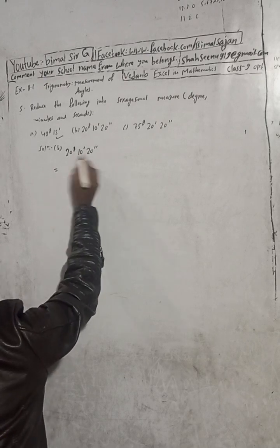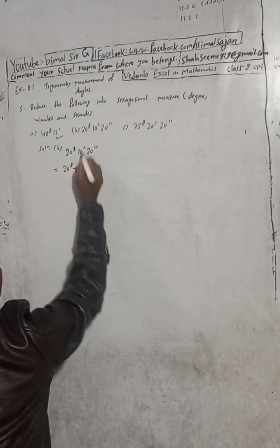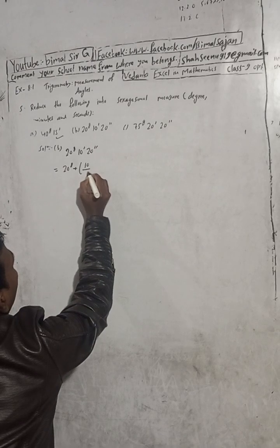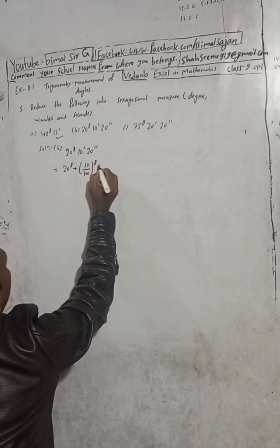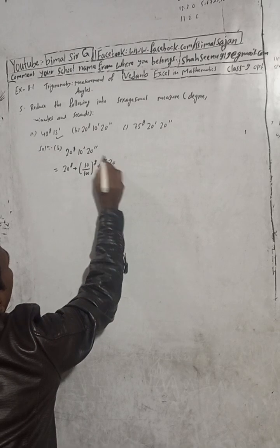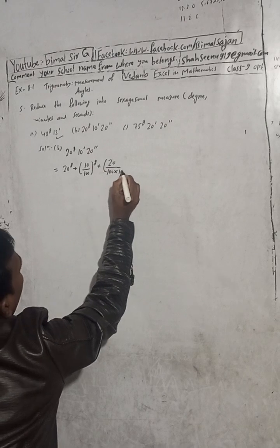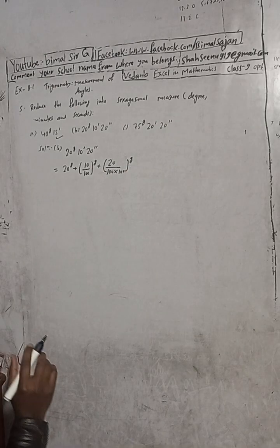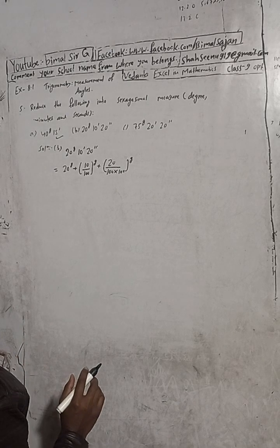So we have 20 grades, plus 10 minutes, plus 20 seconds. Using the conversion formula, 1 minute in centesimal equals 1/100 of a grade, and 1 second equals 1/100 of a minute. So 10 minutes divided by 100 gives 0.1, and 20 seconds divided by 100 multiplied by 100 gives a small decimal. The result is approximately 20.102 grades.